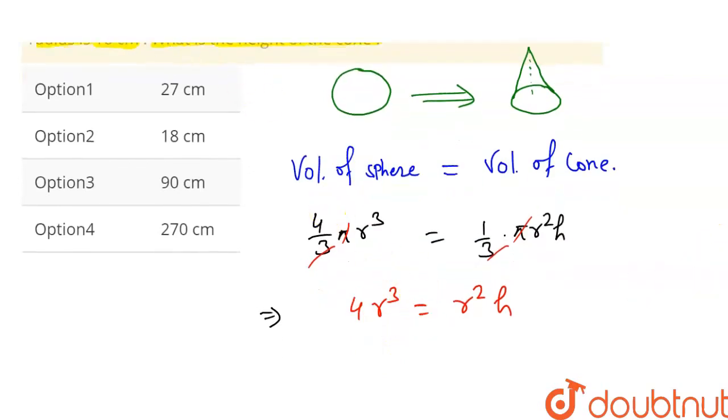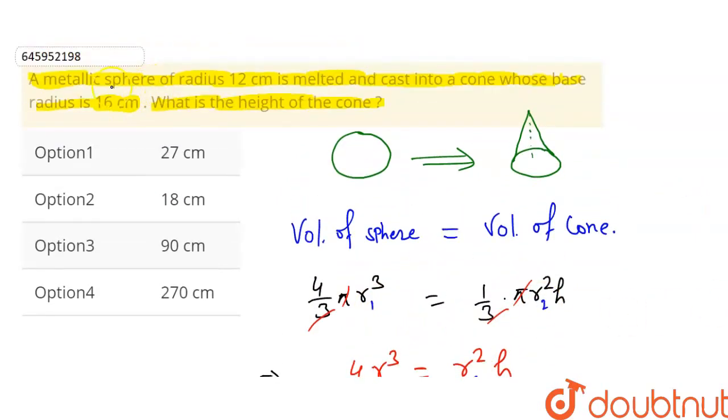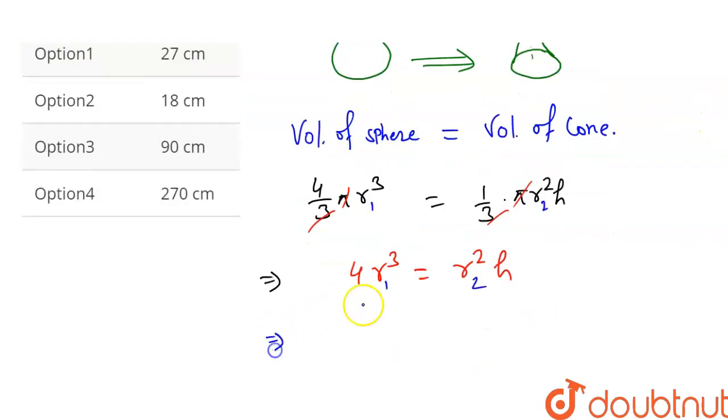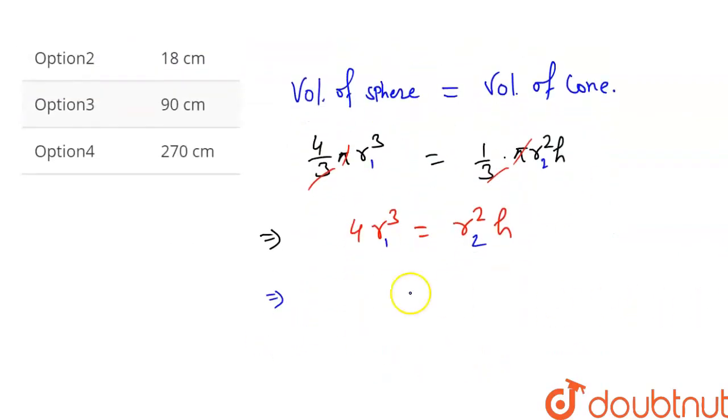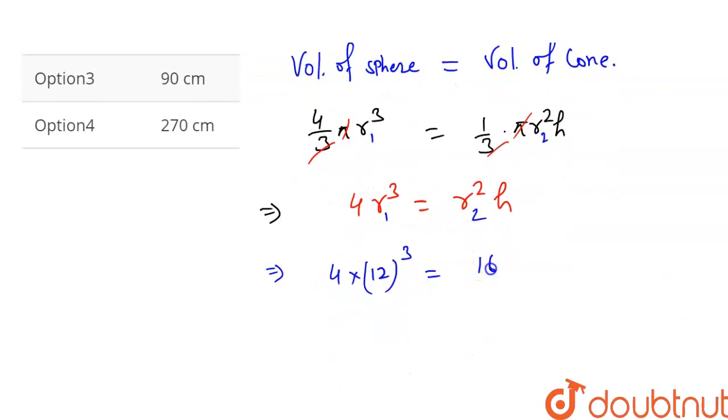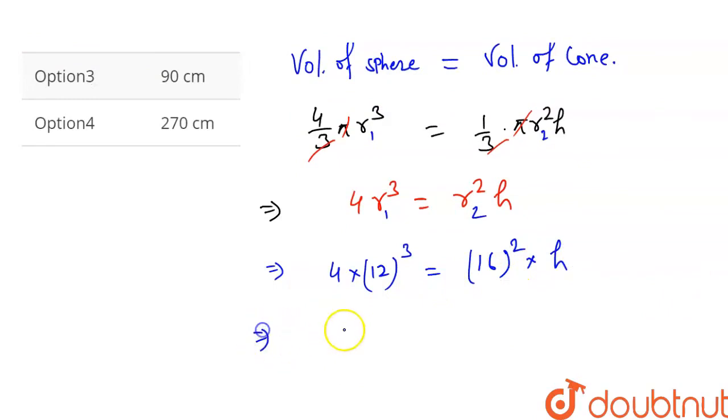The r values are different. The sphere's radius is 12 and the cone's radius is 16. So we have 4 × 12³ = 16² × h.